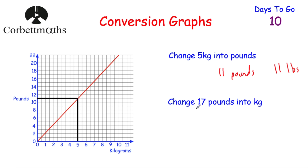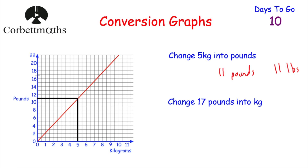For 17 pounds into kilograms, we get a ruler and pencil, go to 17 pounds, across, then down. We can see it lands between seven and eight — in the middle would be 7.5, but it looks about 7.7. So 17 pounds is approximately equal to 7.7 kilograms. Sometimes you can read values off quite cleanly, and sometimes you need to use a bit of judgment — as long as you've gone from the right number across and down correctly, that's fine.